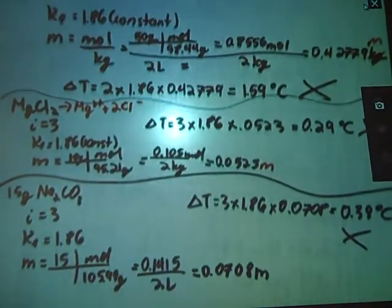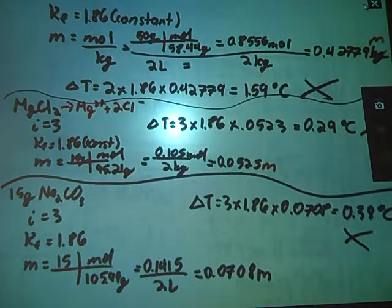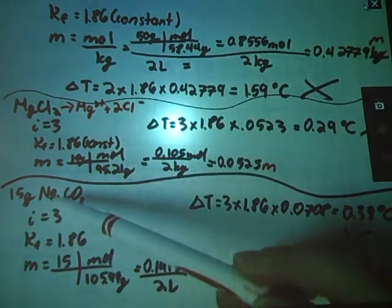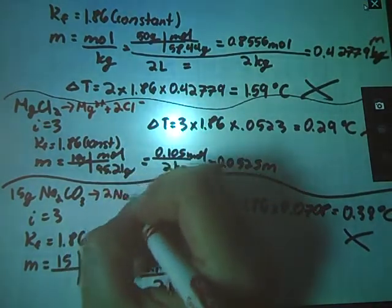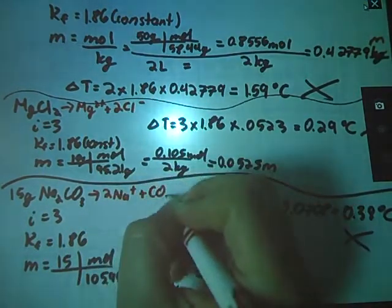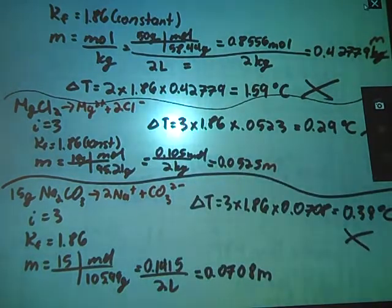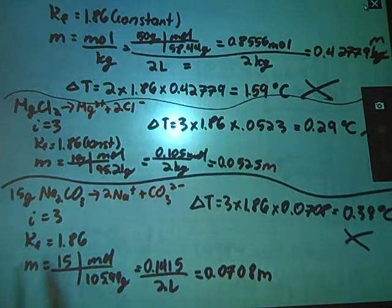One left to try, down here at the bottom, is our 15 grams of sodium carbonate. When this one goes into water, we end up with 2 sodiums and 1 carbonate. Once again, a Hoff factor of 3. Constant freezing. These would be something you would look up, by the way. That's where this freezing constant is coming from.